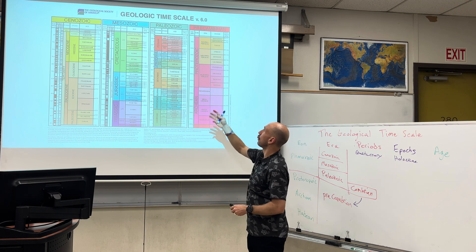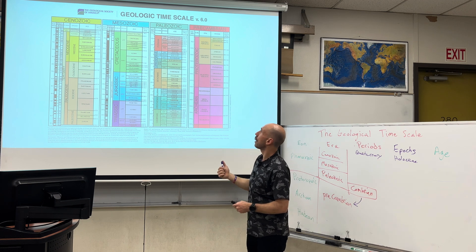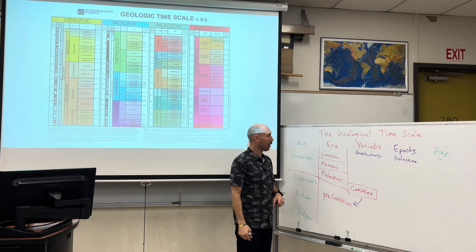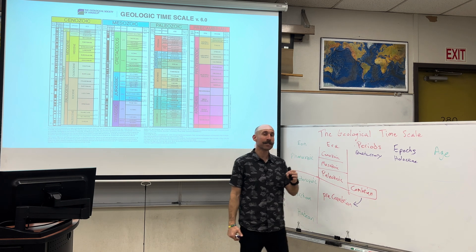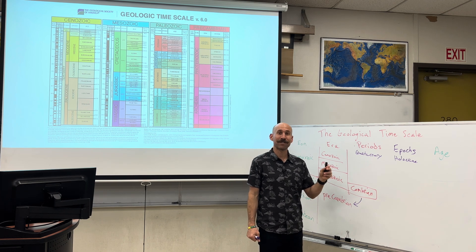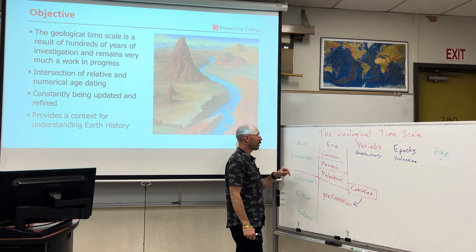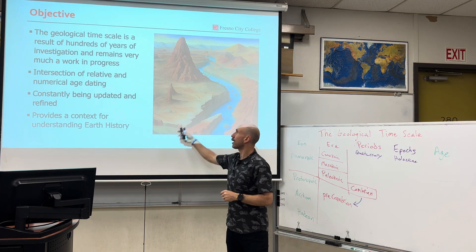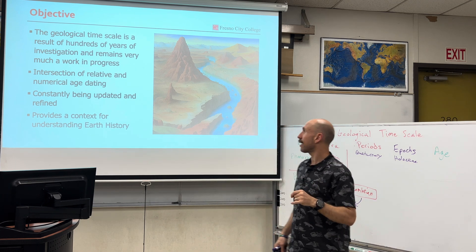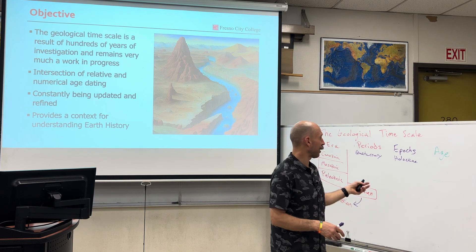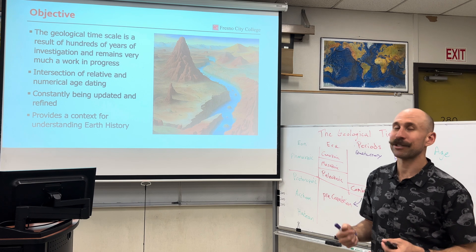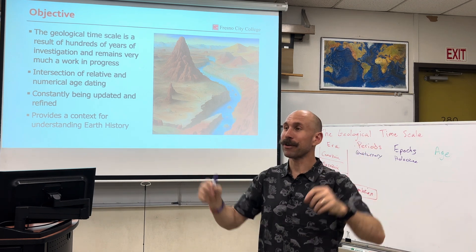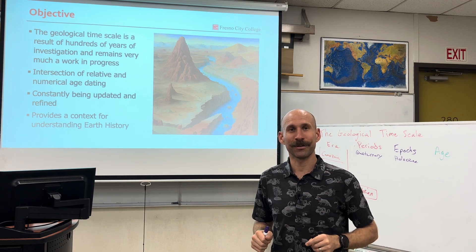This is the geological timescale version 6.0 given to us by the GSA, the Geological Society of America. It goes into all of Earth's history in much more depth, but this has been a broad overview of how we organize and classify the history of the Earth based on various time periods. There are four main divisions: eons, eras, periods, and epochs. You can break them out further with ages. This is the intersection of relative and radiometric age dating, and it's constantly being updated and refined as we find more rocks and discover more information about Earth's history. It provides a context for understanding all of Earth's history from the moment Earth started, 4.6 billion years ago, all the way through to today. Thank you so much.